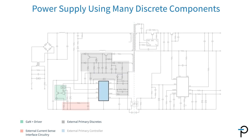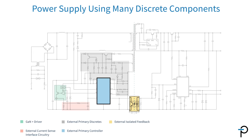That brings us to the primary controller. That's a relatively simple device, and it interfaces into an optocoupler that provides feedback from the secondary to the primary and permits regulation.